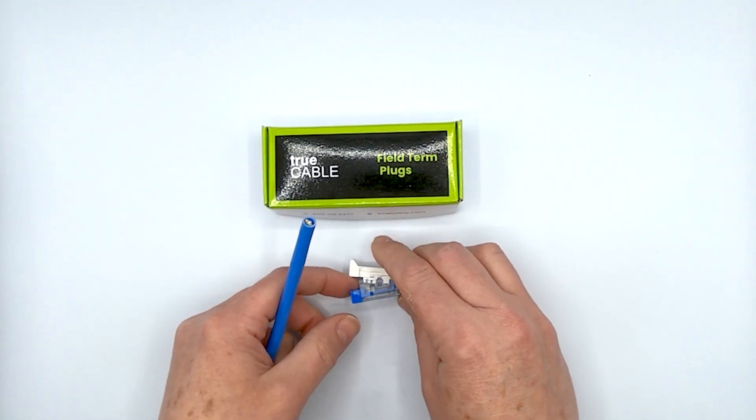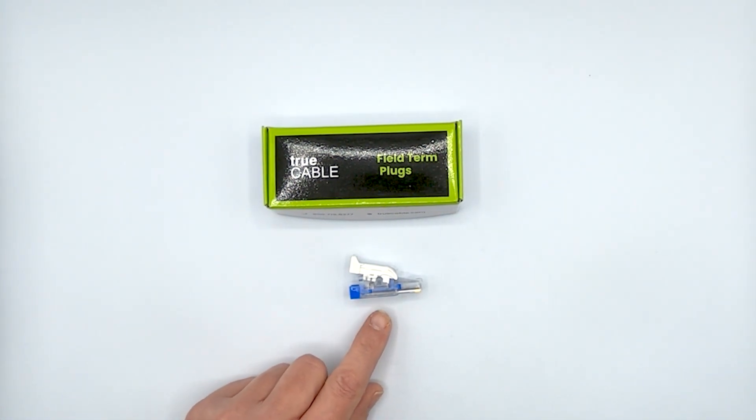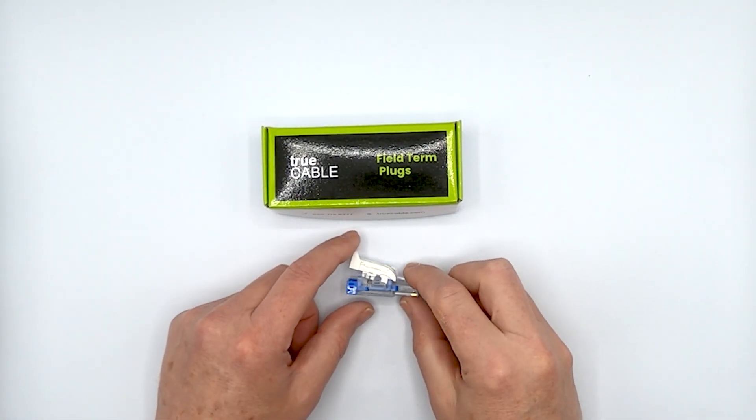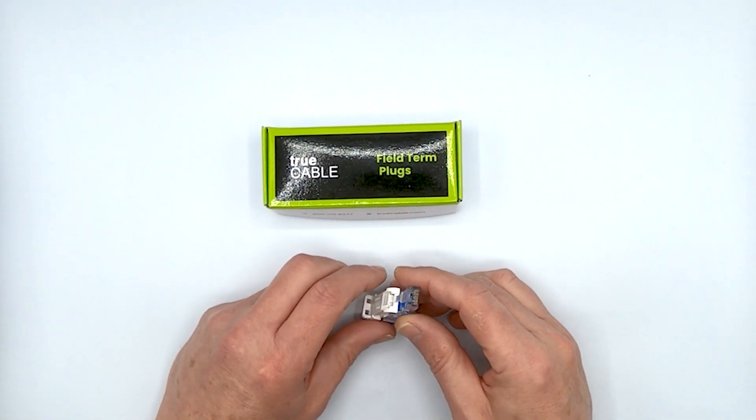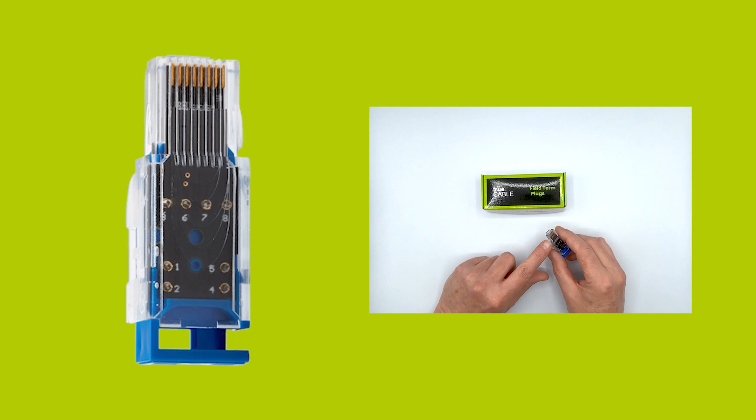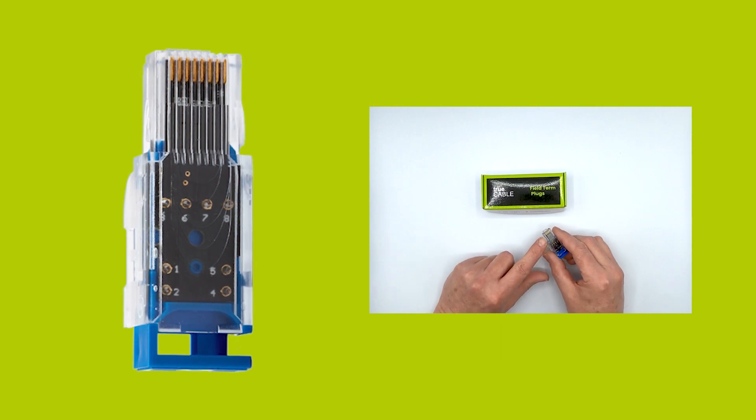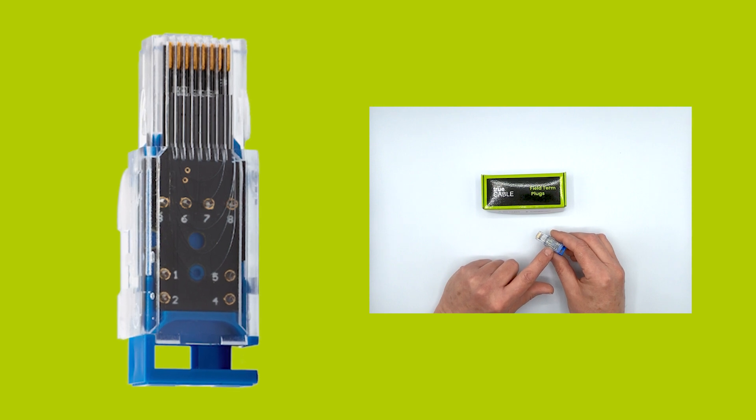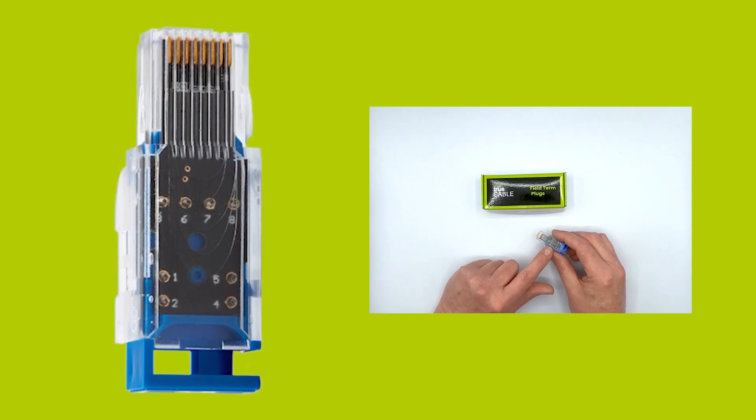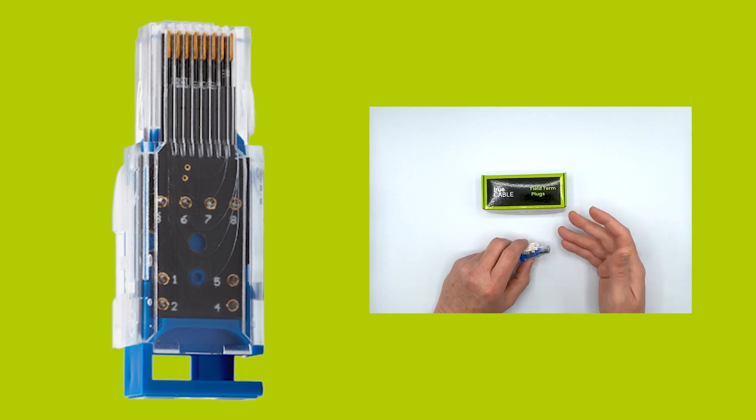This takes a little bit of the pain out of getting a bigger field termination plug plugged into something. So what exactly is a field term plug? It is a male end connector like you would find on a patch cable, but it's got all kinds of secret sauce on the inside that takes solid copper Ethernet and makes it perform up to expectations, in this case Cat 6A.